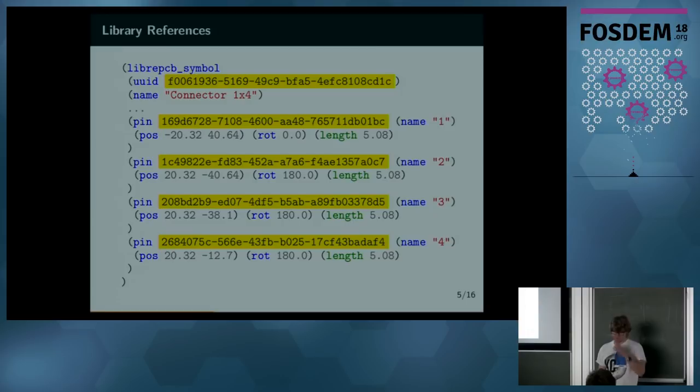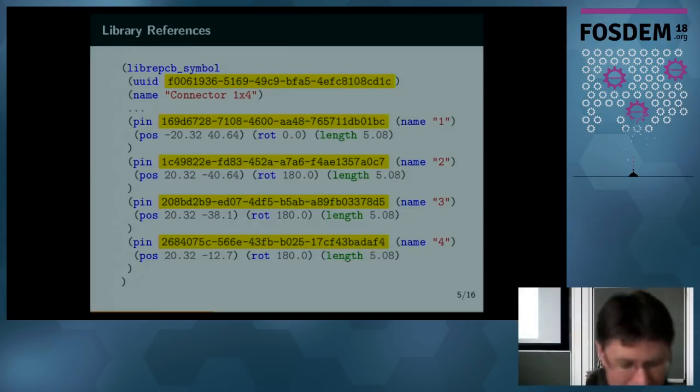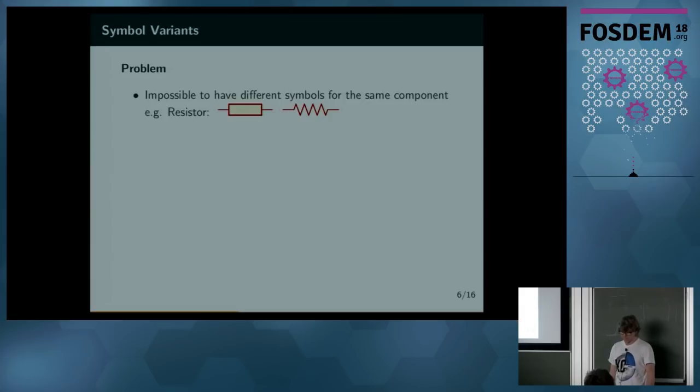And it's also possible to reference entities across different libraries. For example, if you take a look at the file format of LibrePCB, which is based on S expressions, you can see that there are many UUIDs there. For example, a symbol looks like that. At the top is the UUID of the symbol itself. And the name is just a property which you can change anytime. And the same for every pin.